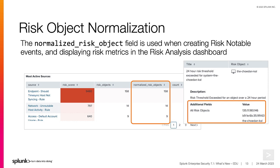Risk object normalization: with ES 7.1, the normalized_risk_object field is used when creating risk notable events and displaying risk metrics in the risk analysis dashboard. The most active sources panel in the risk analysis dashboard is using the normalized risk object field. A risk notable in incident review now shows an all risk objects field, which is also using the normalized risk object field. The risk object here has an IP address, MAC address, and host name that have been grouped together.